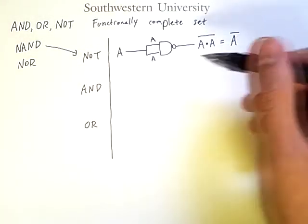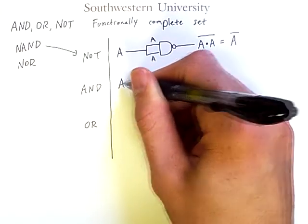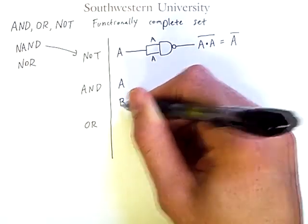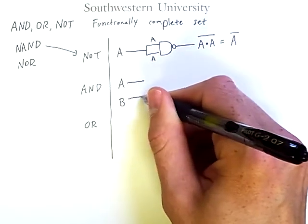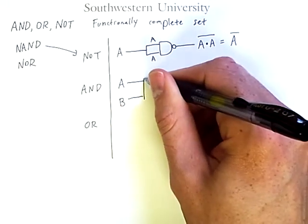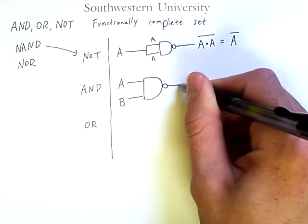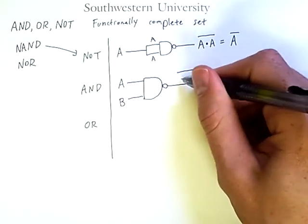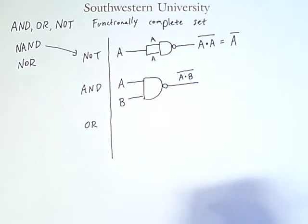So, we've computed NOT using only a NAND gate. Let's do the same for AND. If I have two input signals now, A and B, I can compute the result A AND B by first putting that through a NAND gate. This, of course, computes the negation of A and B.